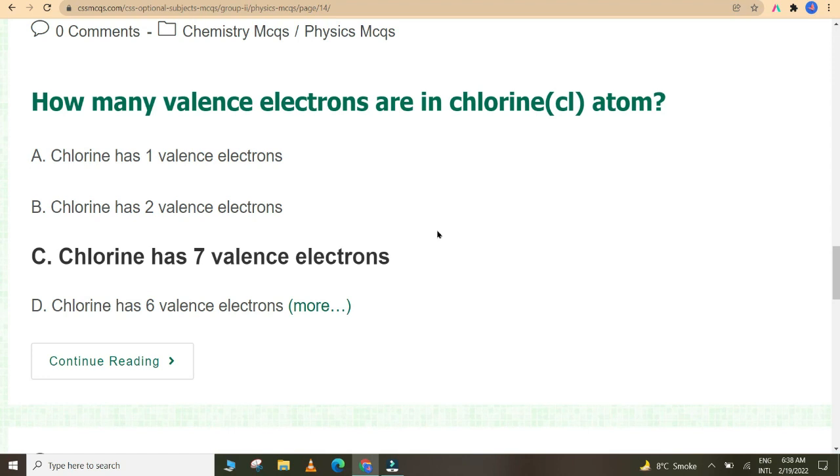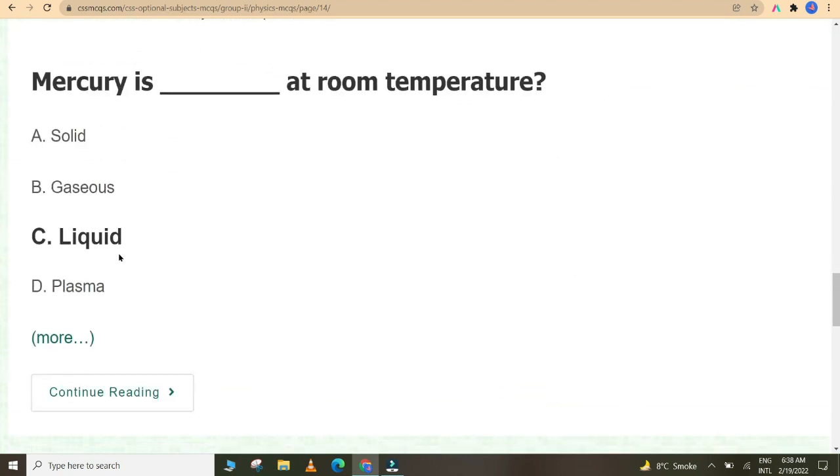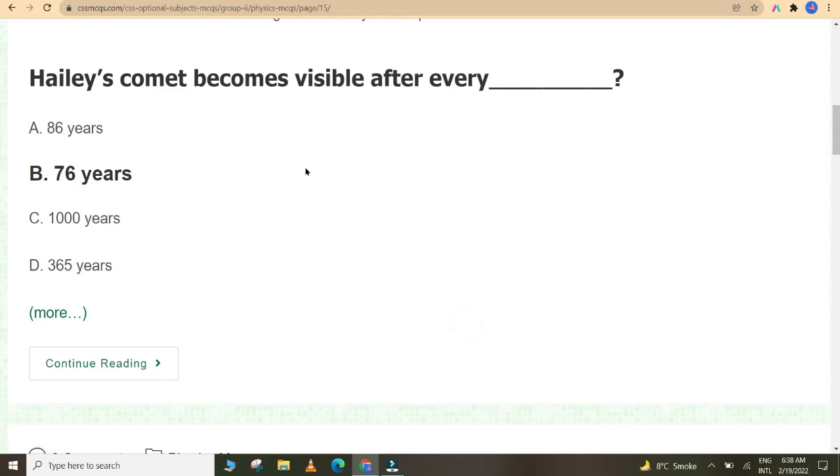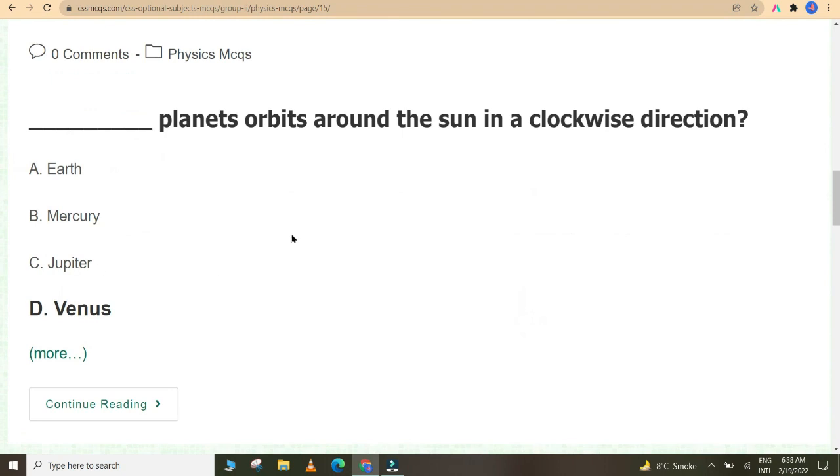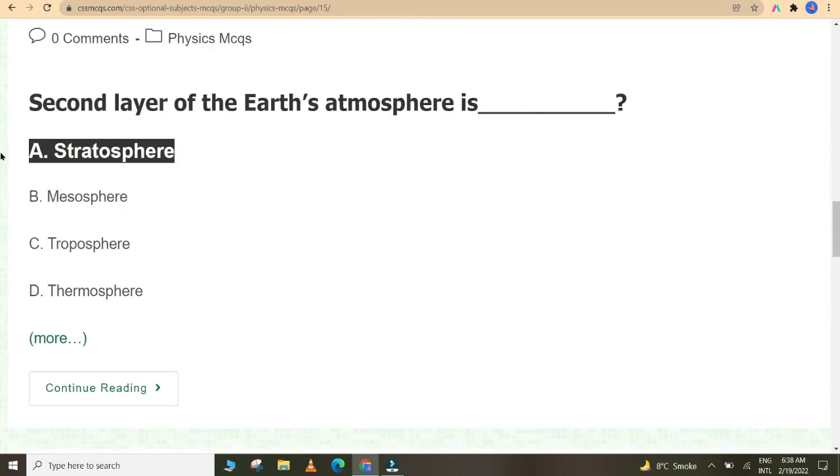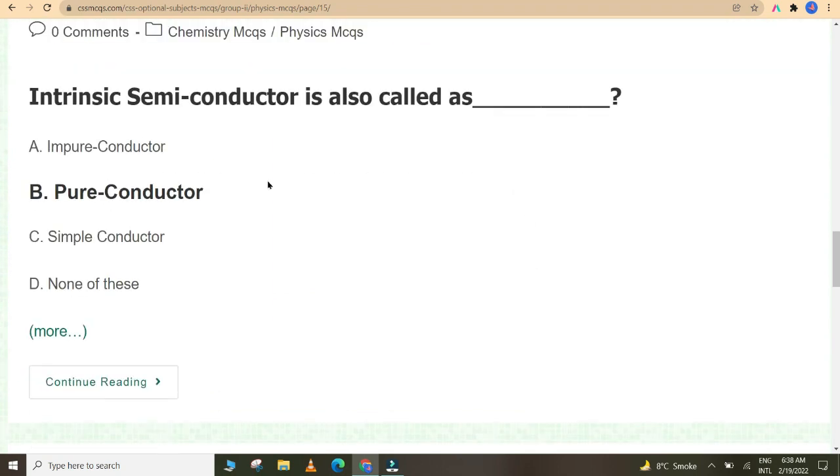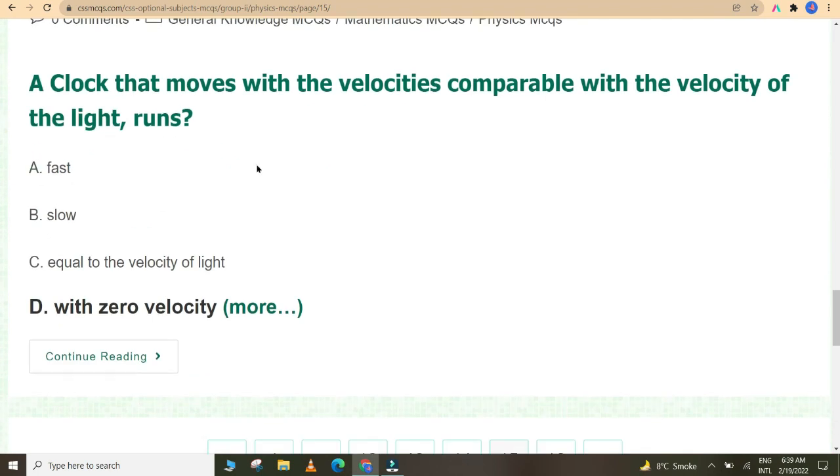How many valence electrons are in chlorine atom? Chlorine has seven valence electrons. Mercury is liquid at room temperature. Halley's comet becomes visible after every 76 years. The fastest rotating planet is Jupiter. Venus orbits around the sun in a clockwise direction. Second layer of earth's atmosphere is stratosphere. Intrinsic semiconductor is also called as pure conductor. In physics, Sir Max Planck got Nobel Prize in 1918 for his work on energy quanta. A clock that moves with velocities comparable with the velocity of light runs with zero velocity.